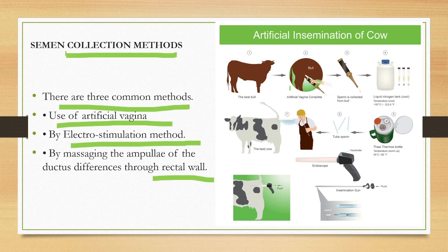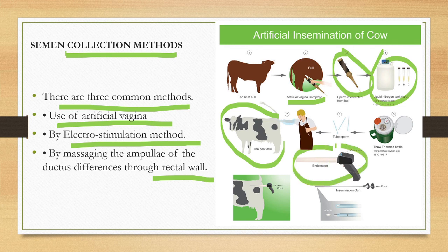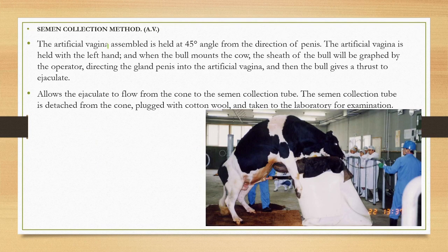A healthy bull is selected and the artificial vagina is inserted onto the penis of the bull. The semen is collected and stored in liquid nitrogen. The semen is then introduced into the vagina of the female cow using different instruments. This is the semen insemination gun — the tip contains the sperms.